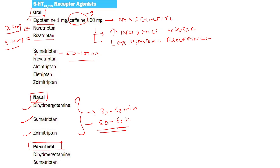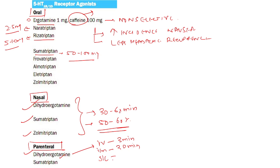FDA-approved parenteral formulations for rapid relief are dihydroergotamine and sumatriptan. Dihydroergotamine reaches peak plasma levels within 3 minutes by IV route, 30 minutes by intramuscular route, and 45 minutes by subcutaneous route. Sumatriptan is given at 4 to 8 mg subcutaneously and is efficacious in 50 to 80 percent of patients.